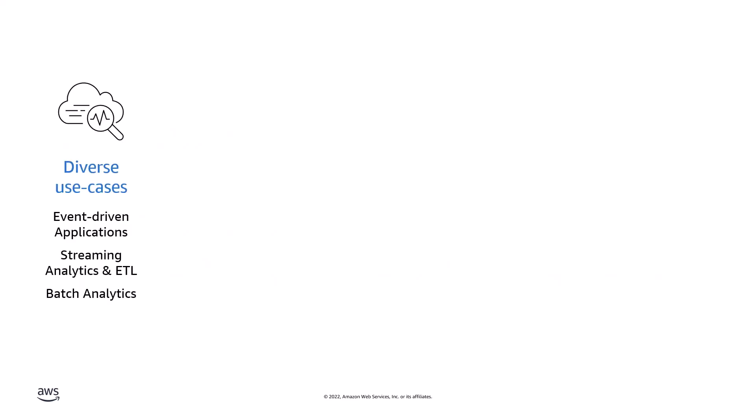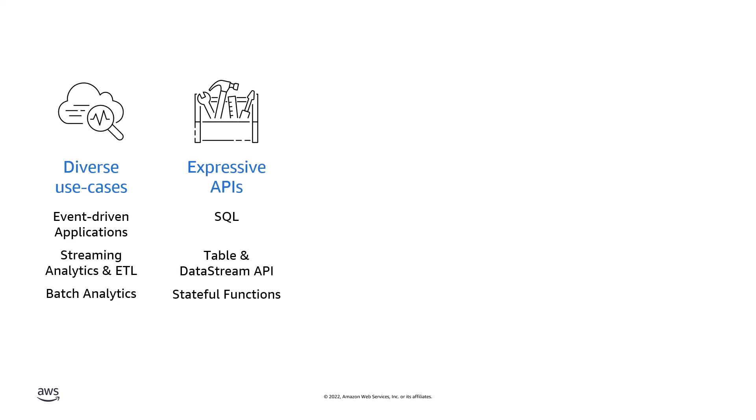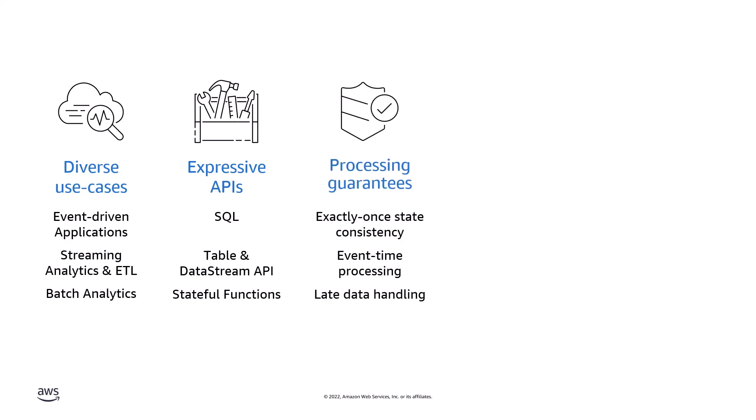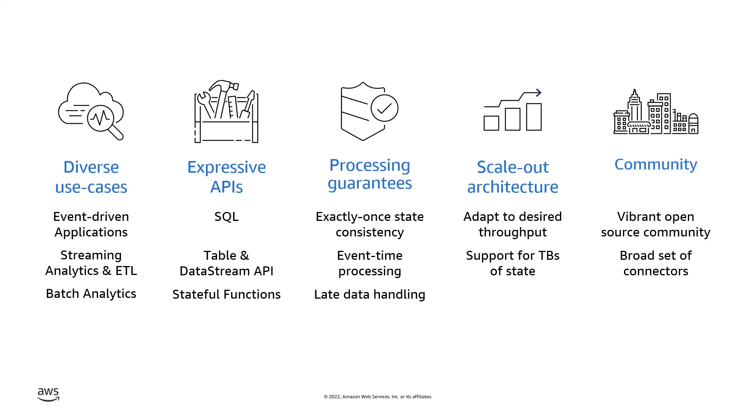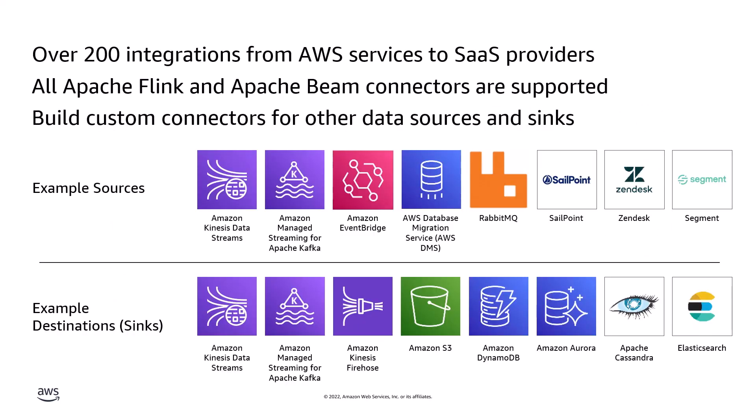Apache Flink supports a diverse set of use cases and uses a layered API approach, where each API offers a different balance between control and ease of use. Flink processing guarantees exactly-once state consistency, event time processing, and late data handling. It is also easily scalable and is supported by a vibrant open-source community. Thanks to that community, there are more than 200 integrations from AWS services or to third-party SaaS providers, and all Apache Flink connectors are supported on Kinesis Data Analytics as a managed service.